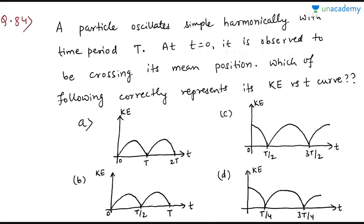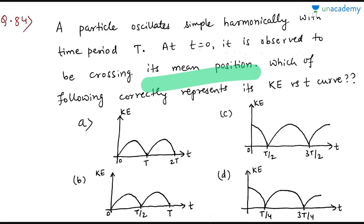The next question is energy-based and the easiest in this lesson. There are 4 graphs as options. Try to solve it yourself. In the solution: at t = 0, the particle was at the mean position, so its speed is maximum, meaning kinetic energy is also maximum — KE cannot be zero at t = 0. This cancels two options immediately.